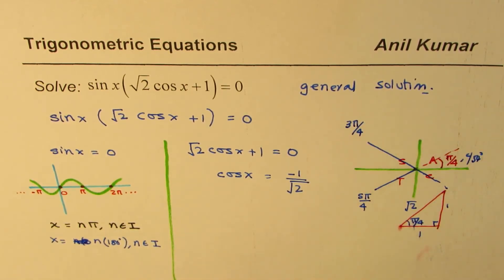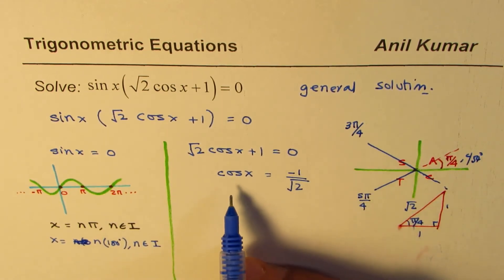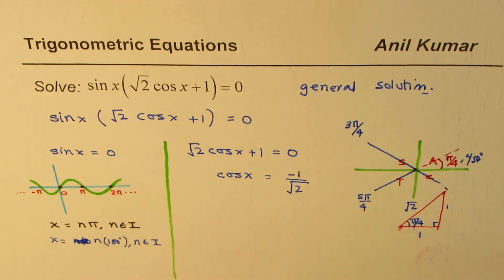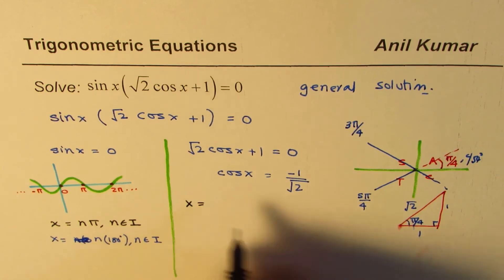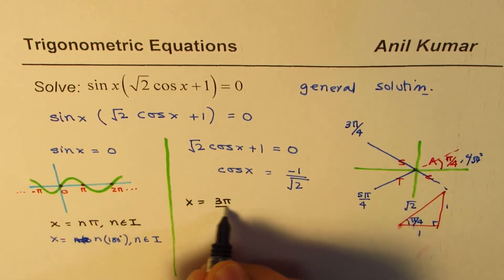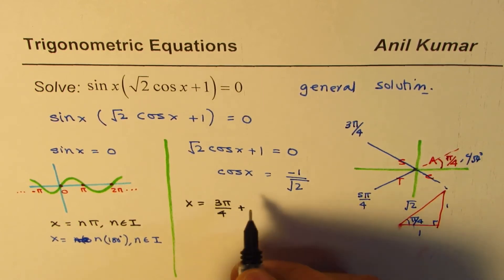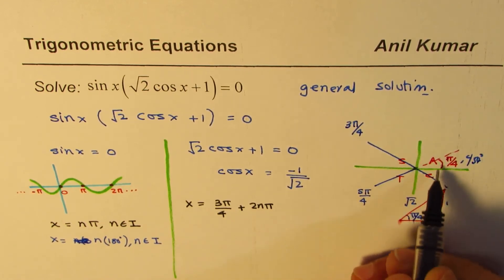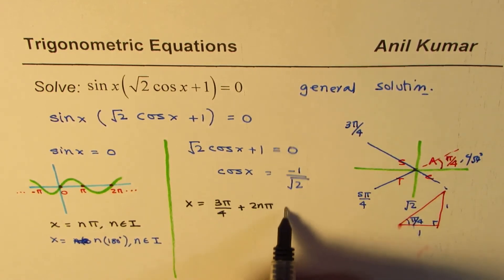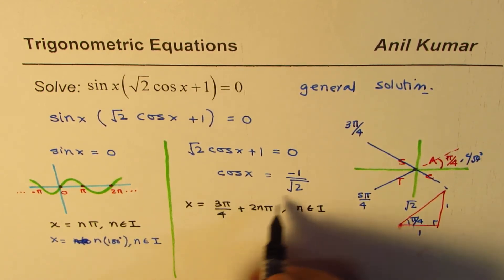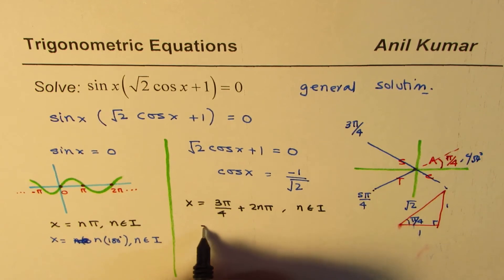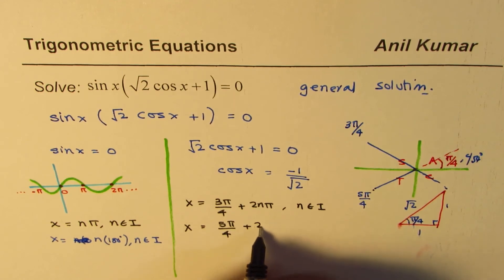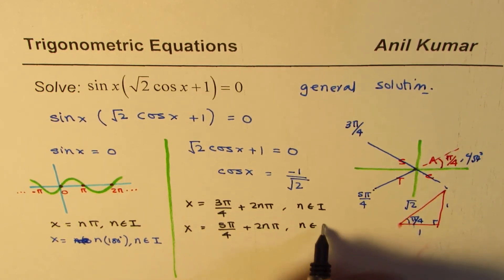Since the period for the cos function is 2 pi, we could write x in general form as x equals to 3 pi by 4 plus 2n pi. So since this repeats after one full cycle, 2 pi is the time period where n belongs to integer. And the other one, this could be written as x equals to 5 pi by 4 plus 2n pi, where n belongs to integers.